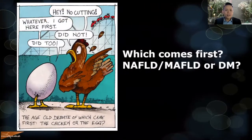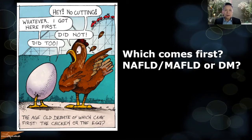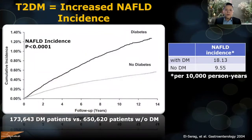This brings us to the age-old question: does fatty liver give rise to metabolic derangements, or is it the other way around? This question has been answered by multiple studies. In terms of the development of fatty liver, the presence of diabetes predicts increased incidence of fatty liver later on. So patients can have metabolic derangements first and then develop fatty liver.